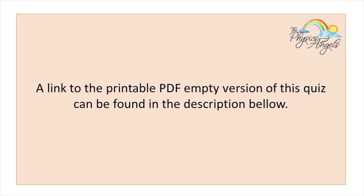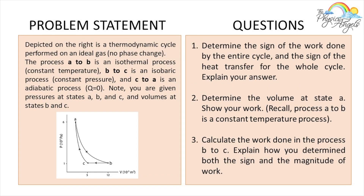So this is the problem that we're going to be solving today. Depicted on the right is a thermodynamic cycle performed on an ideal gas, no phase change. The process A to B is an isothermal process, B to C is an isobaric process, and C to A is an adiabatic process. Note you are given pressures at states A, B, and C, and the volumes at states B and C. The first thing we have to answer is what is the change of internal energy for the entire cycle. Then we have to determine the sign of work done by the entire cycle and the sign of the heat transfer for the whole cycle.